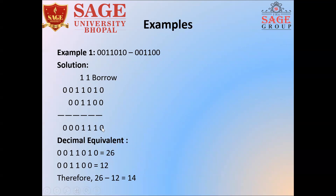So as we know, according to the rules: 0 minus 0 is 0. Now 1 minus 0 is 1 — if we subtract 0 from any number, that number remains as it is. Now 0 is the smallest digit in binary operation and 1 is the largest number. Whenever we subtract the largest from the smallest, we need to take a borrow from the neighbor. When we take the borrow, it becomes 10 — in binary, 10 means 2.